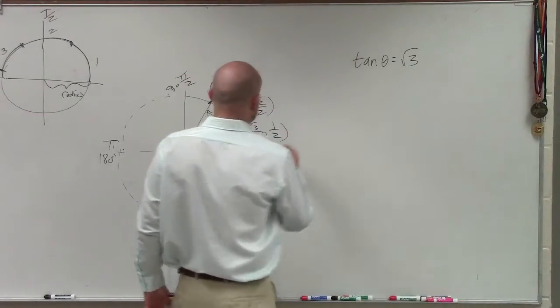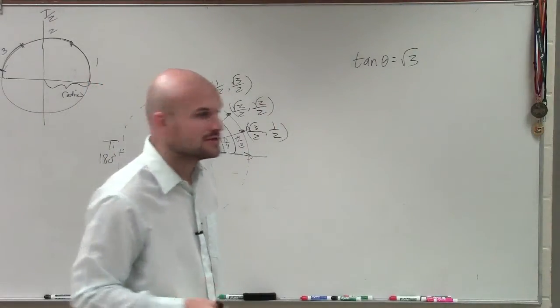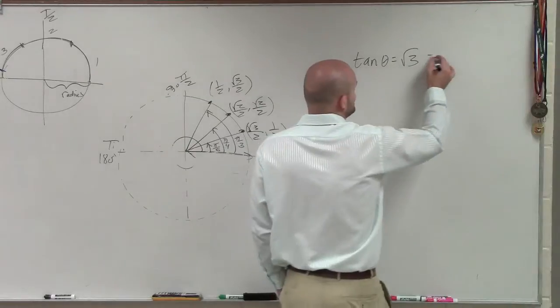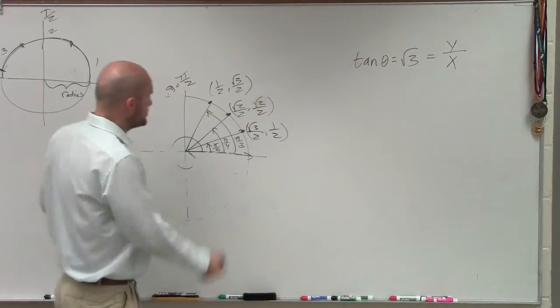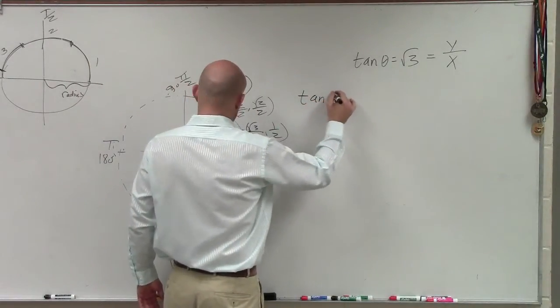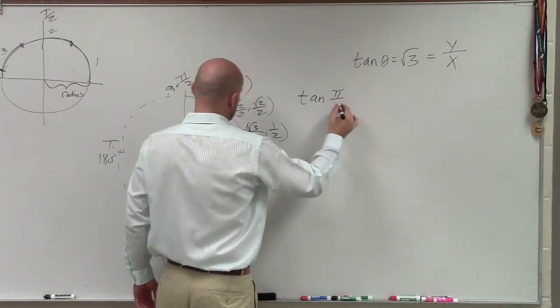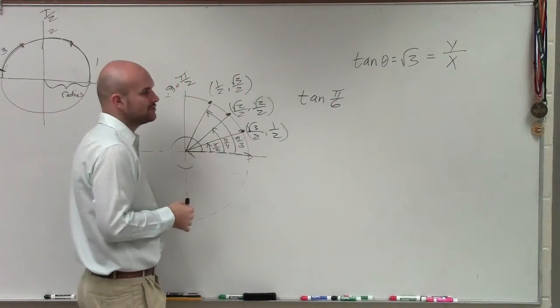So what I want to do, remember, these are points. Square root of 3 is a point on the unit circle. So therefore, I know that it is a ratio of y over x. So what I can do is, out of these three points, I just need to determine which one of my angles is going to produce, when I do y over x, is going to do square root of 3.